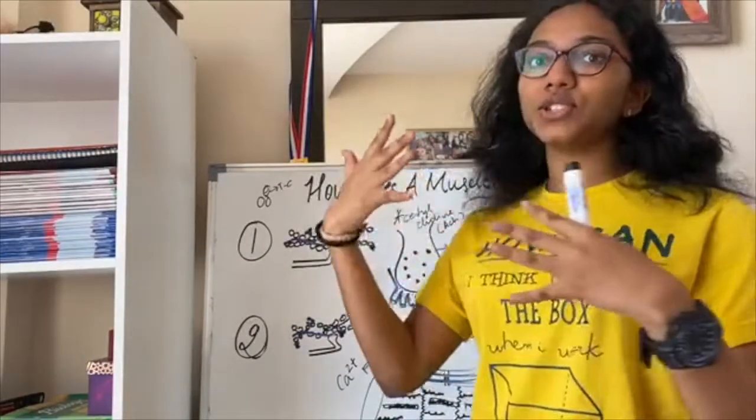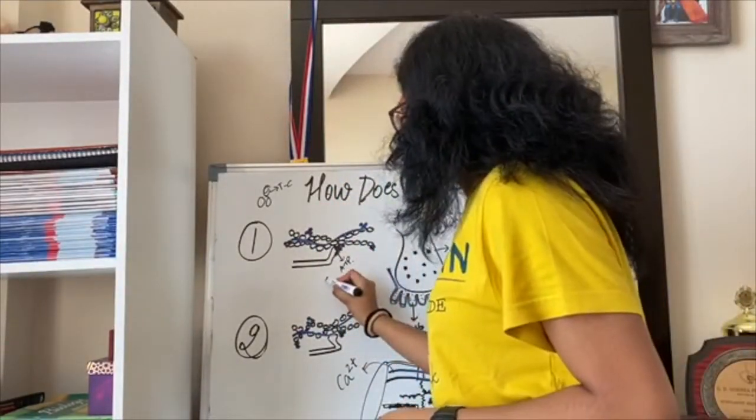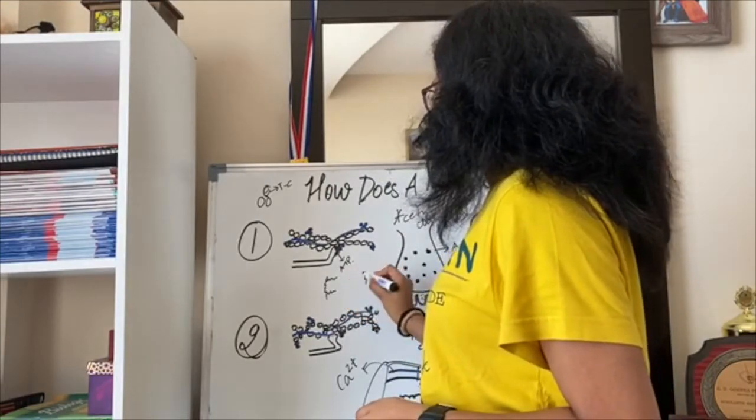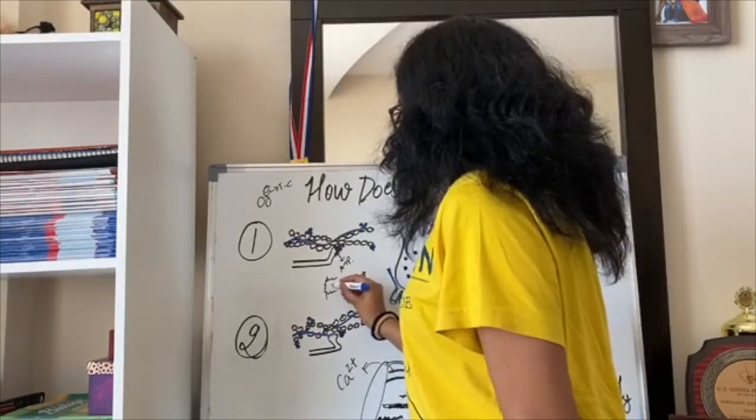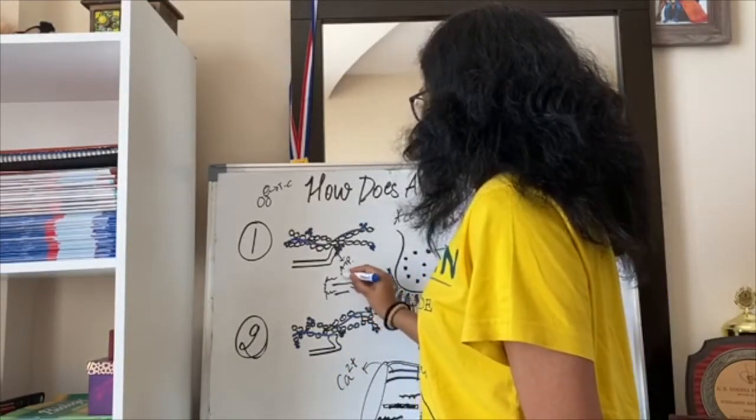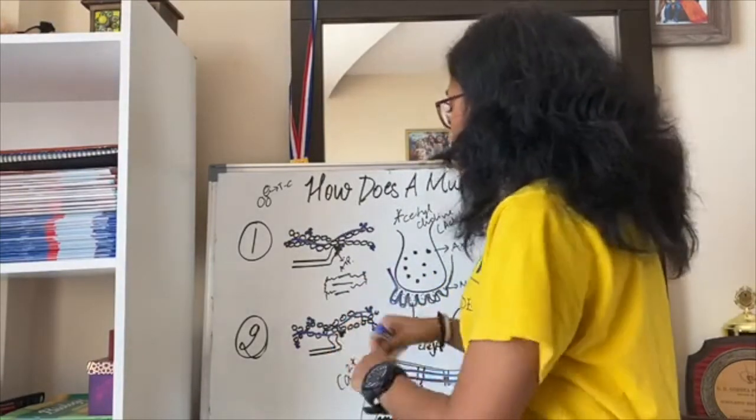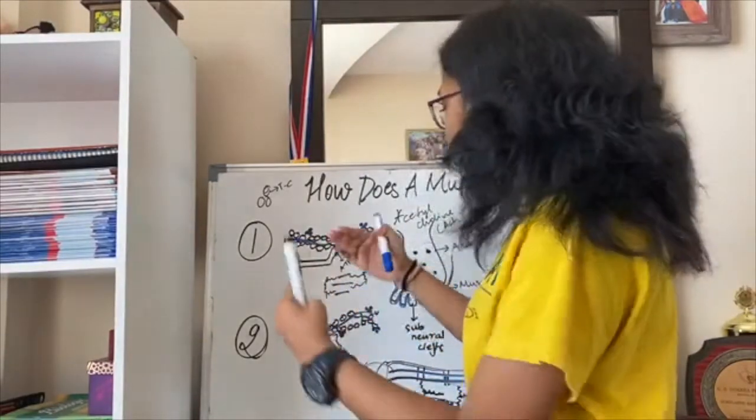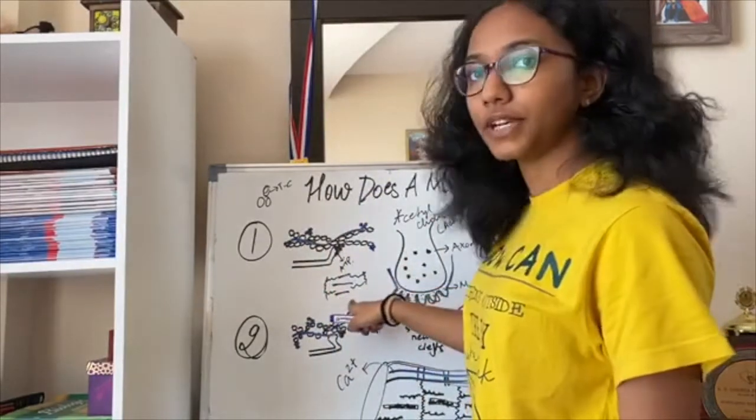Now, muscle has to contract and if you remember how this looks like, this is a Z line, this is a Z line, this is an actin, actin, actin, actin, let me draw a myosin and this is a myosin, myosin, myosin. So for this to contract, the two Z lines have to come closer. That means that the actin filaments have to keep moving across the myosin filaments.